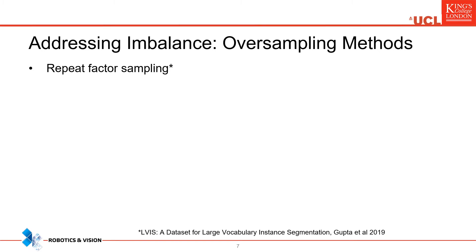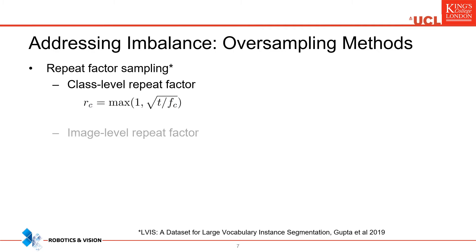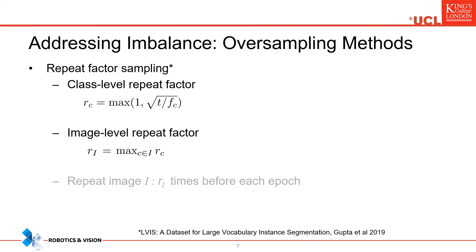The second approach is repeat factor sampling, adapted from its original usage in instance segmentation. Specifically, repeat factors are computed offline at the class level as a decreasing function of the class occurrence frequency and aggregated at the image level. Each image is then repeated according to its repeat factor, which is stochastically rounded before each epoch.